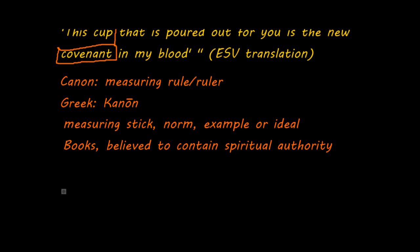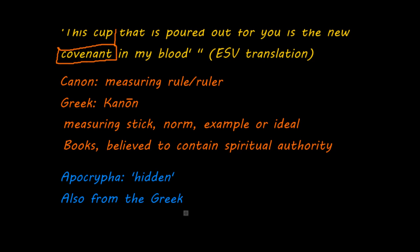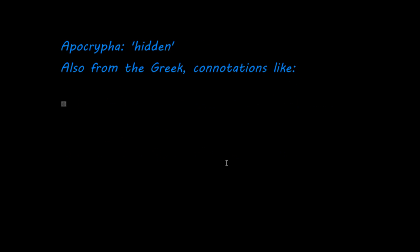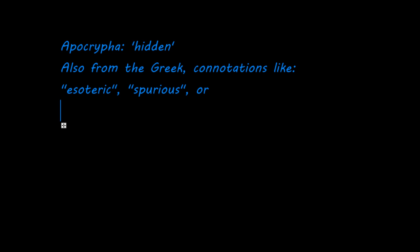The next word I want to discuss is the word apocrypha. We saw this in the last video, where I mentioned several books that are considered to be apocrypha. Apocrypha in Greek means hidden, so these are the so-called hidden books. But it also has connotations like esoteric, spurious, or of questionable authenticity.